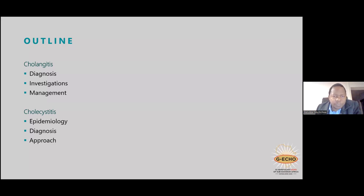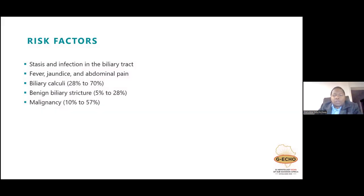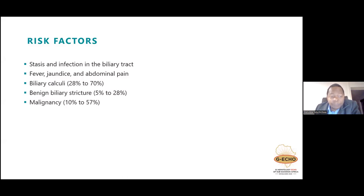We'll also look at the epidemiology, including some local data, the diagnosis, diagnostic criteria, and the approach to management. The risk factors for acute cholangitis come with stasis and infection of the biliary tract, with subsequent presentation of fever, jaundice, and abdominal pain.